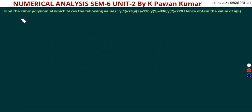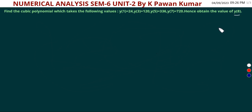Find the cubic polynomial which takes the following values: y(1) = 24, y(3) = 120, y(5) = 336, and y(7) = 720. Also obtain the value of y(8). This is last year's question from Osmania University — a very important question.